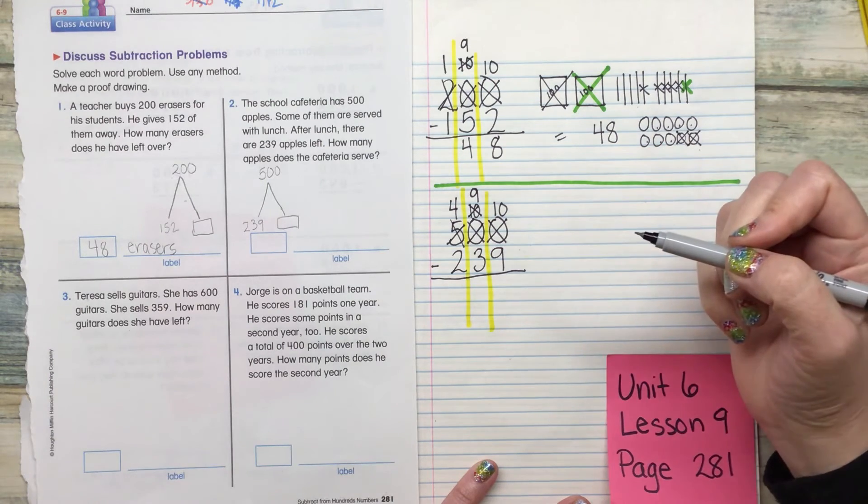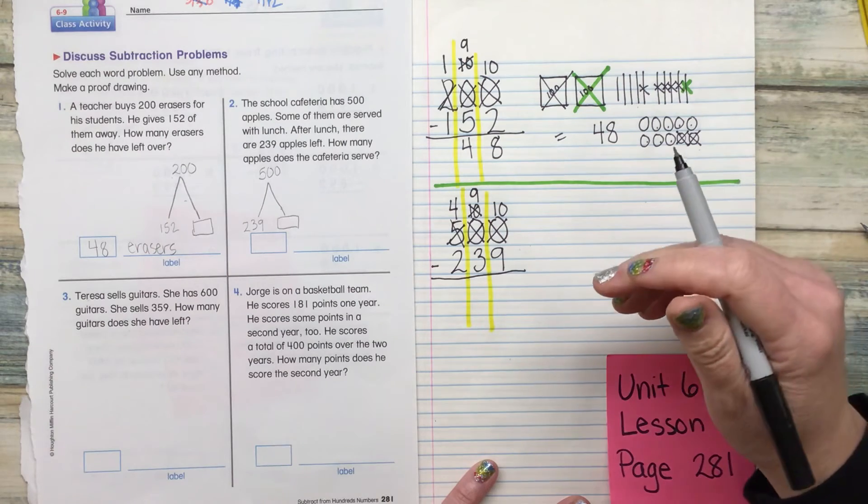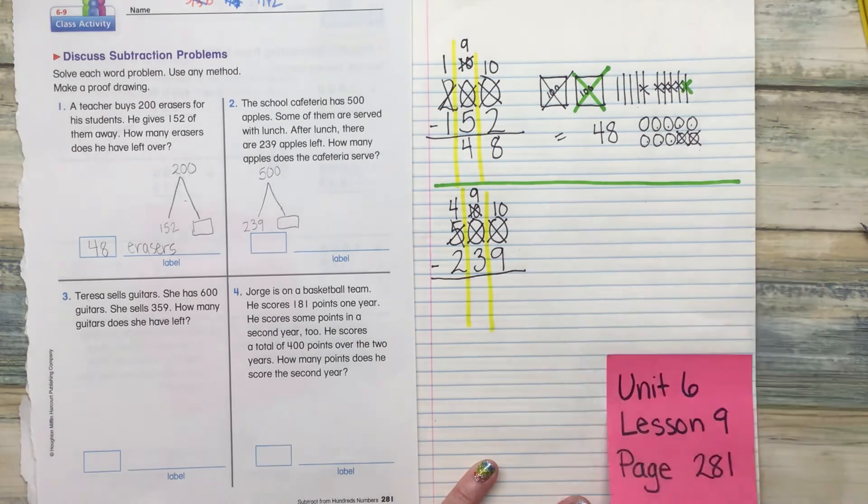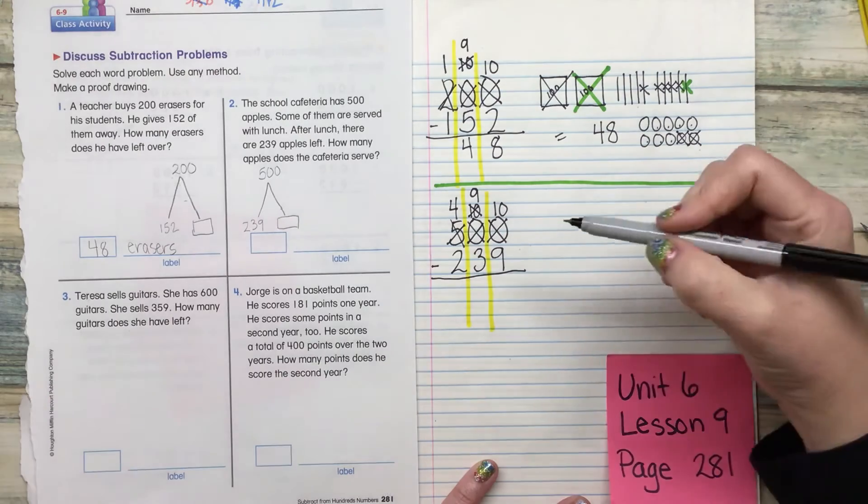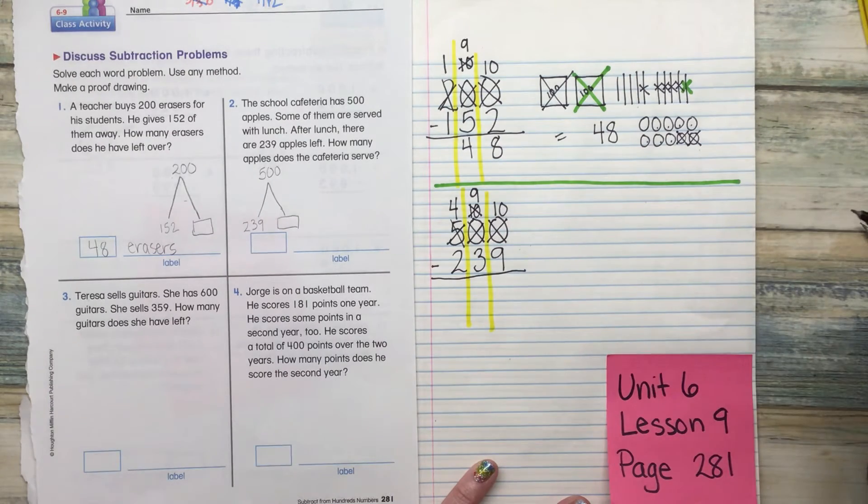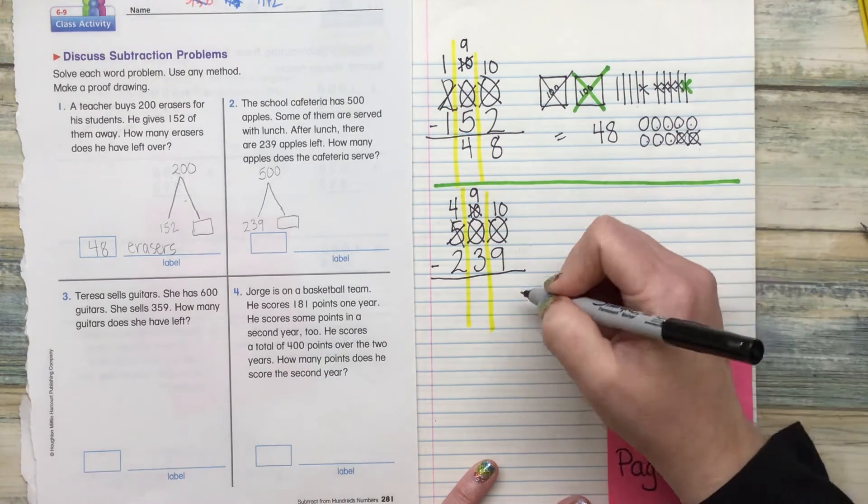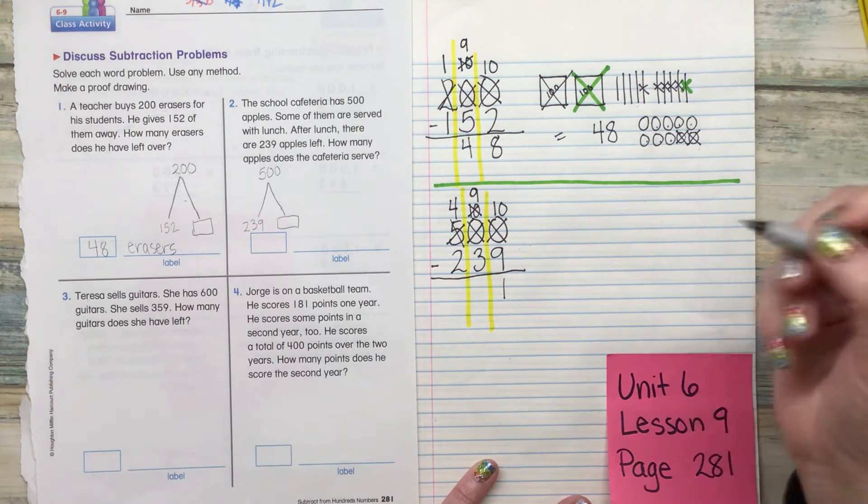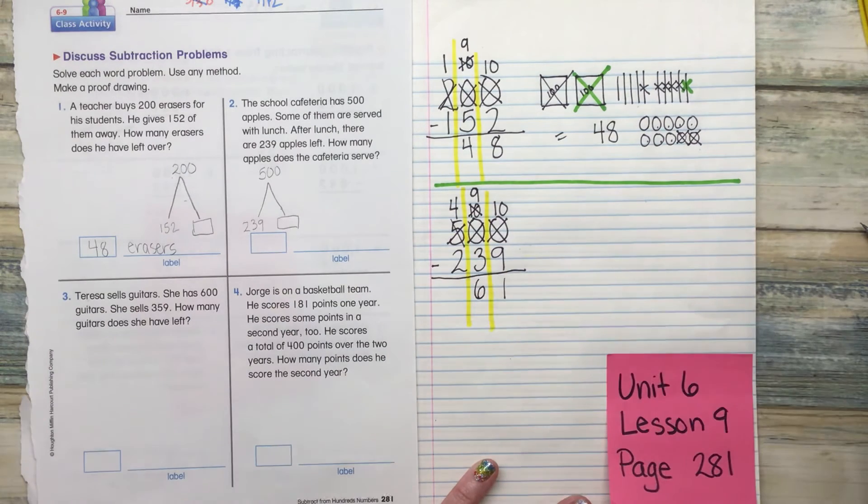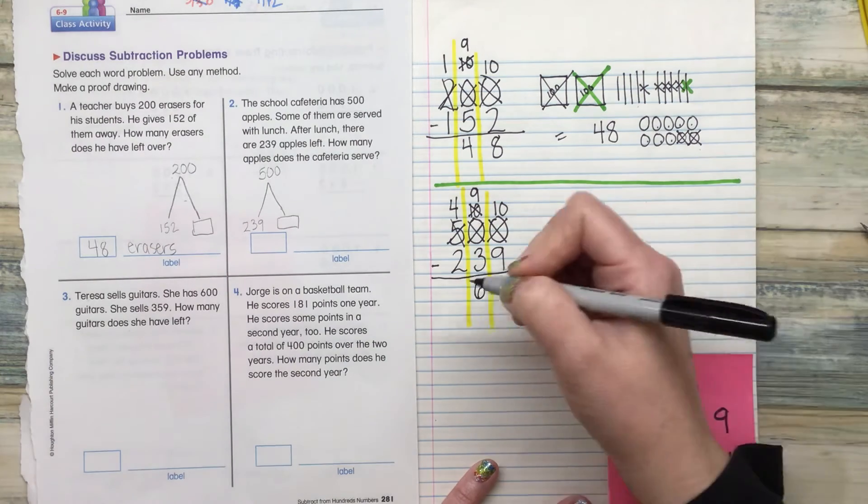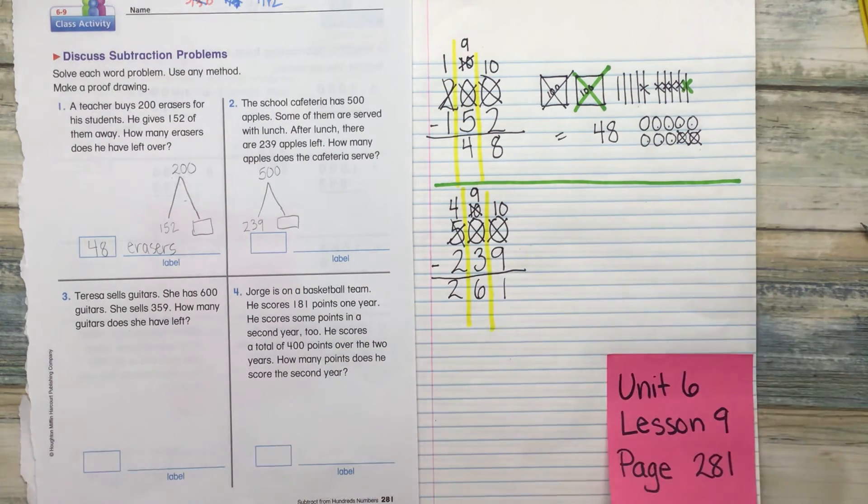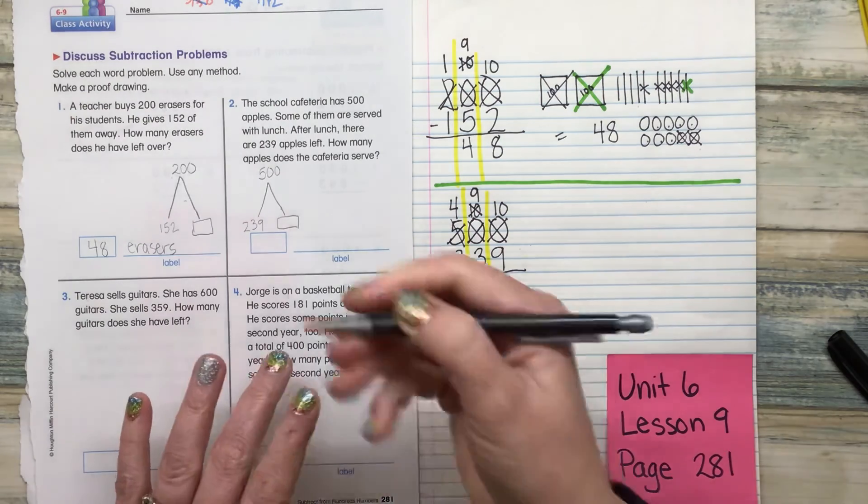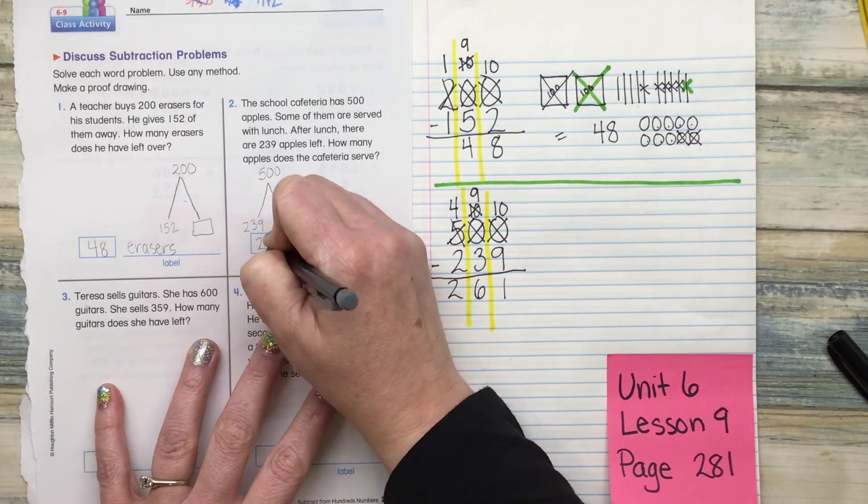All right, this is one of those times where you're just going to unmute yourself. When I ask the question, say the answer one time, and then mute yourself again. What is 10 minus 9, everyone? What is 9 minus 3, everyone? And what is 4 minus 2, everyone? All right. So our answer is 261 apples.